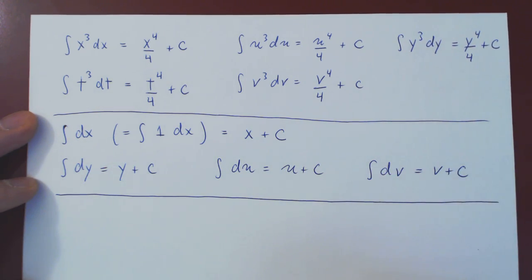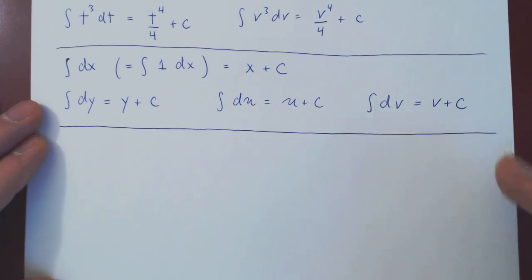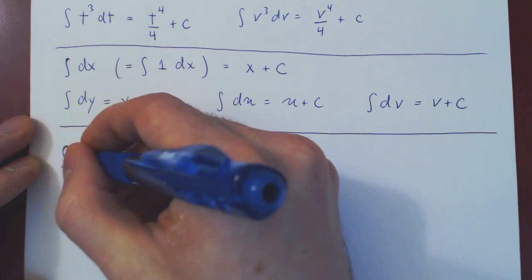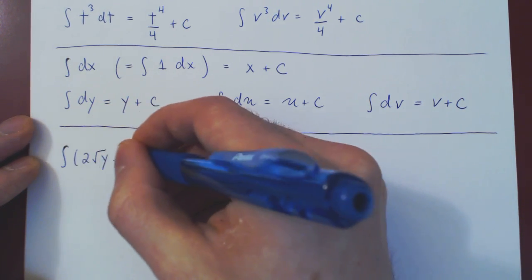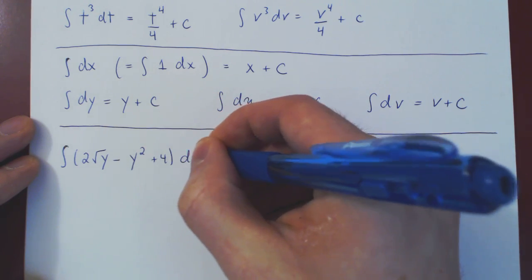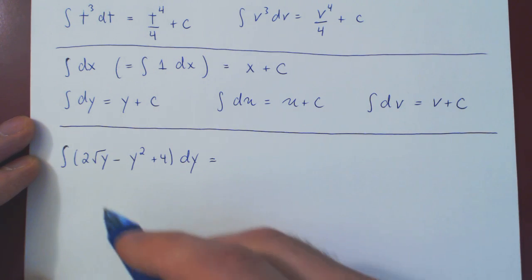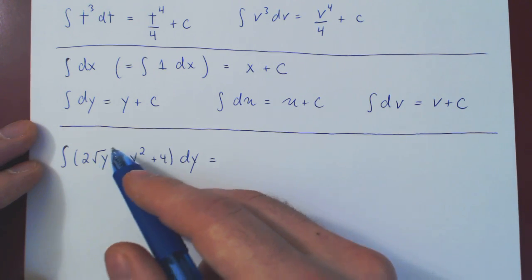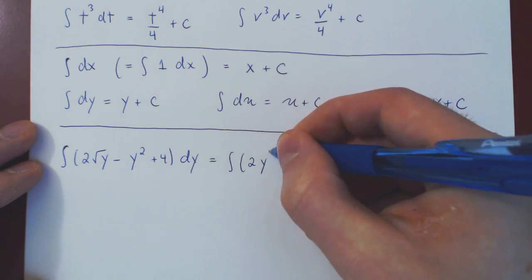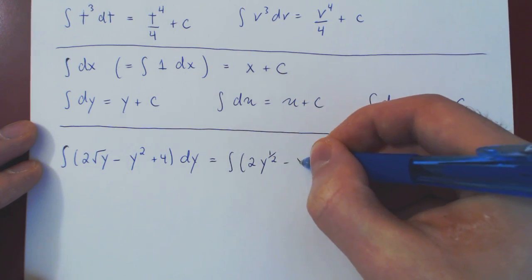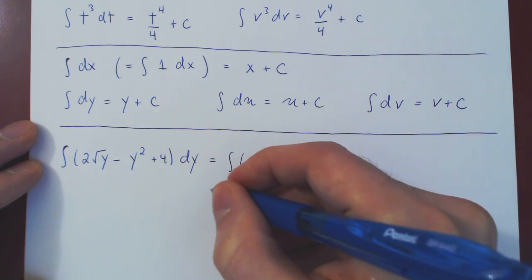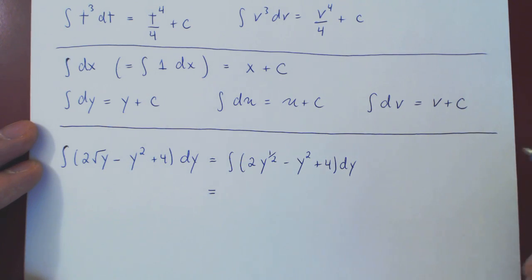Let's look now at just two final examples. So suppose we said integrate 2 square root of y minus y squared plus 4 with respect to y, so dy. Well, if we wish to use the power rule, we'll rewrite first the root of y as the power of 1 half. So 2y to the 1 half minus y squared plus 4. And now with properties of integration and the power rule, we're good to go.